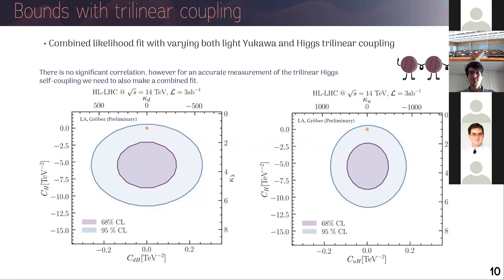In a new upcoming publication, we plan to include a combined fit between the trilinear coupling modification and the light Yukawa, analogous to what Azatov did for the top. We see there is not much correlation, but for a precise measurement of kappa_lambda or cH one needs either an assumption on the light Yukawa coefficients or a combined fit, since different values of cUH or cDH will give different marginalized distributions for kappa_lambda.